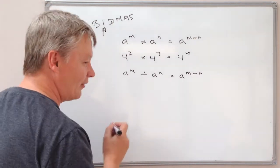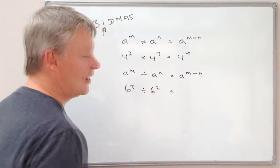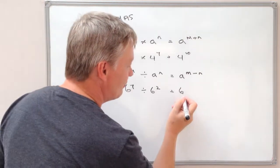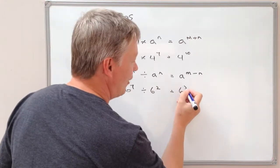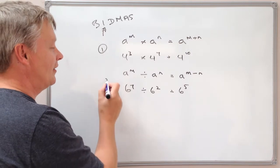Let's say we use something like 6 to the power of 7, divided by 6 to the power of 2. Guess what the answer's going to be? It's going to be 6 to the power of 7, take away 2, which is 5. So that's the second rule that you need to remember. So this is number 1, this is number 2.